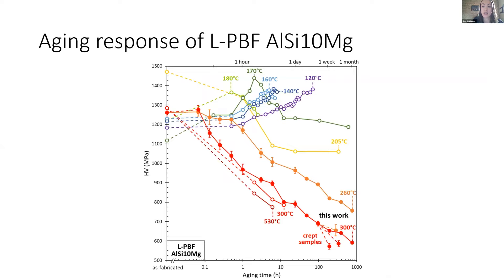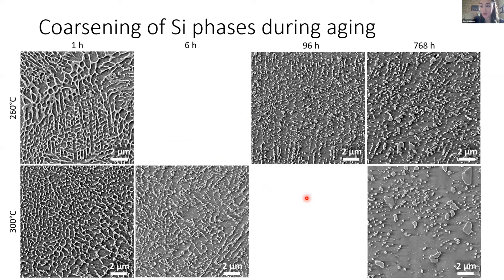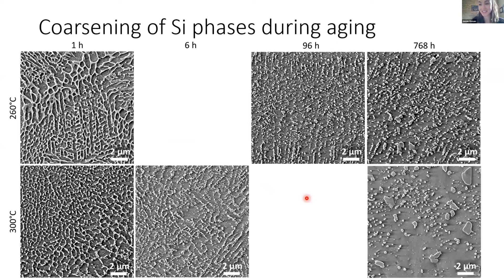We can see these elongated columnar grains that grow in the direction of the thermal gradient, which is upwards. Compared to traditional casting — where grains might be hundreds of microns to millimeter size — here grains are about 10 microns wide by 50 microns in the elongated direction. When we do some heat treatments, the sample coarsens a lot. We performed heat treatments at 300°C and at 260°C, comparing against behavior studied at lower temperatures. The aluminum-silicon phase is coarsening really badly, causing a steep decrease in hardness. Up to this point, everyone assumed aluminum-silicon-magnesium alloys would be useless above 225°C — we wanted to check how true that was.